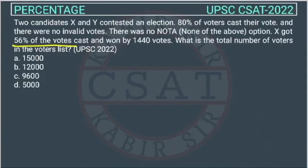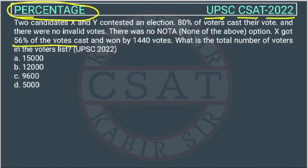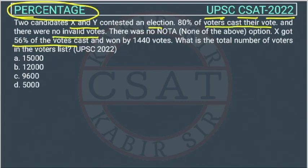This is a question on percentage asked by UPSC in the CSET paper of 2022. Two candidates X and Y contested an election. 80% of the voters cast their vote and there were no invalid votes.